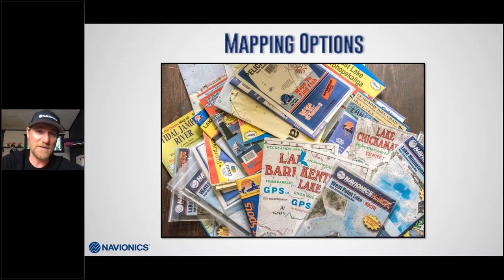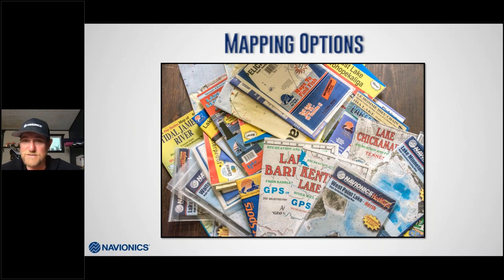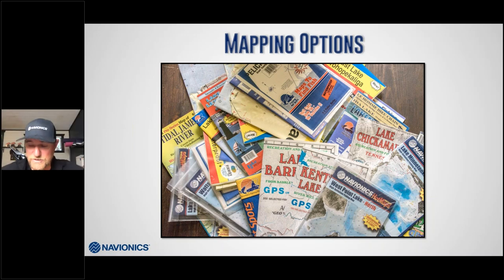You don't have to be that old to remember paper lake maps — I used to carry them, collect them, bust them out in the wind trying to figure out what to do on the water. Now everything I need is on my graph or I can find on my phone using the Navionics boating app. You can also use the web app at navionics.com — it's free for anybody who wants to see what contours are available for the lakes they're going to fish.